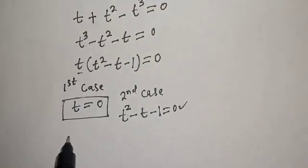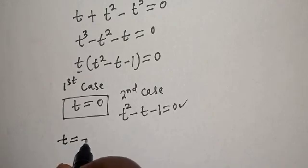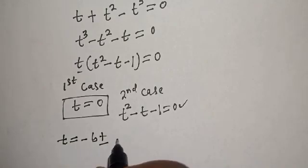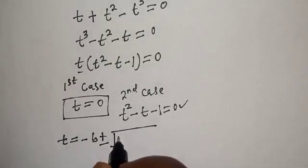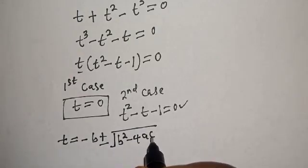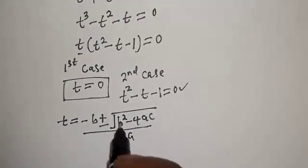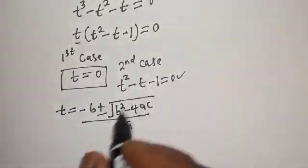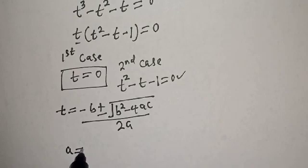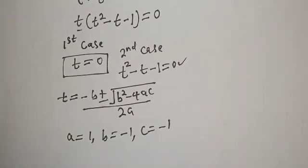This quadratic equation can be solved using the quadratic formula: t equals negative b plus or minus square root of b squared minus 4ac, over 2a. From this equation, a equals 1, b equals negative 1, and c equals negative 1. Let's substitute these values.